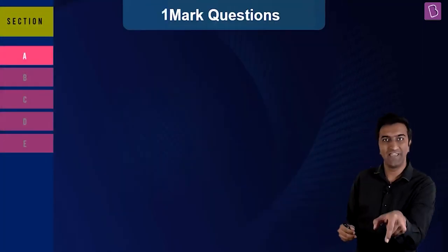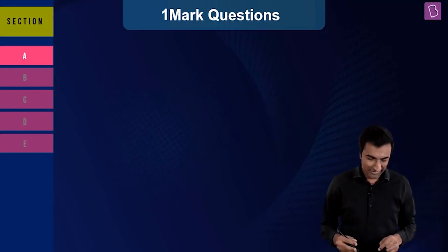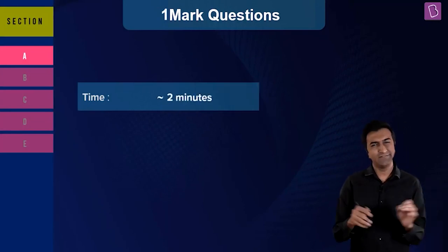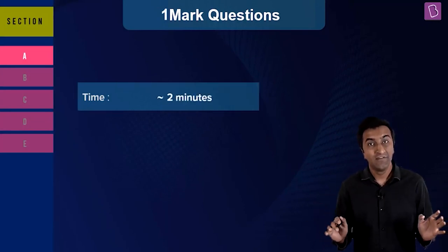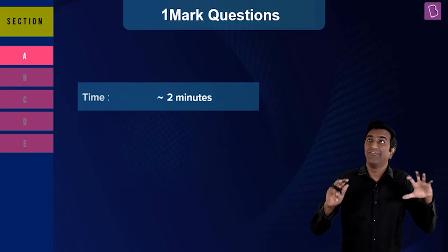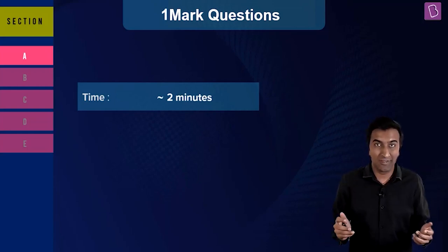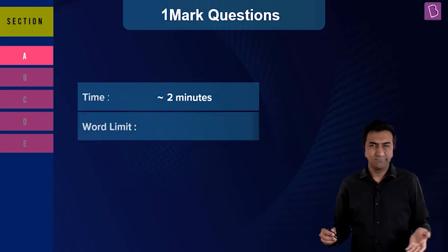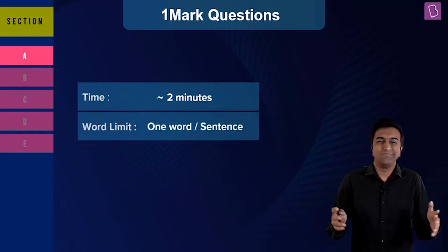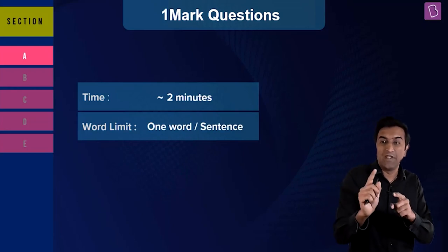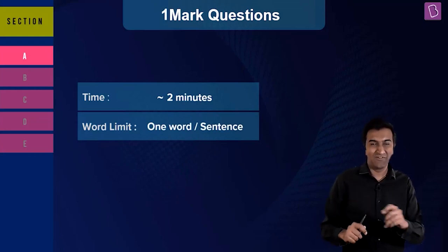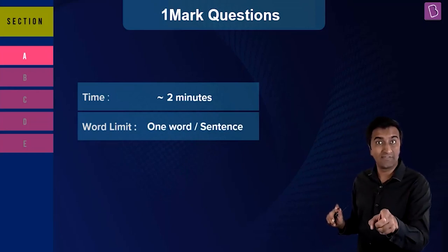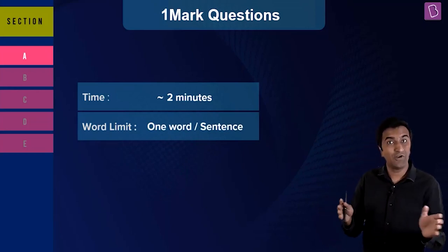One-mark questions are usually very easy — you either know it or you don't. There's no way of conceptualizing something on the spot. Give it an average time of about two minutes minimum. Why is time important? It all adds up. The word limit is one word or a sentence — very straightforward. You need to write the right keyword. Write a very precise answer. Don't write stories here.